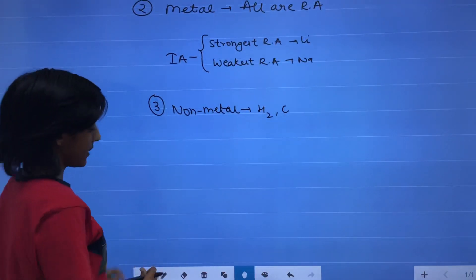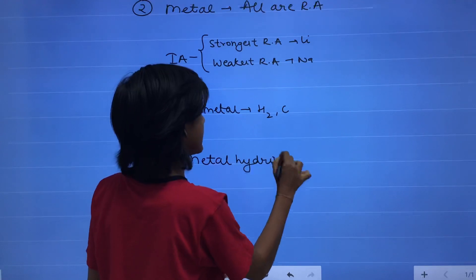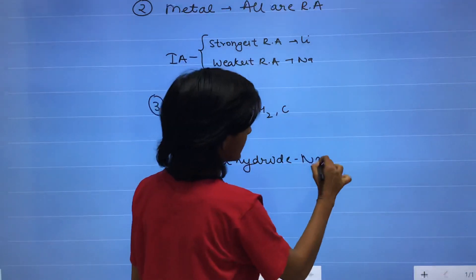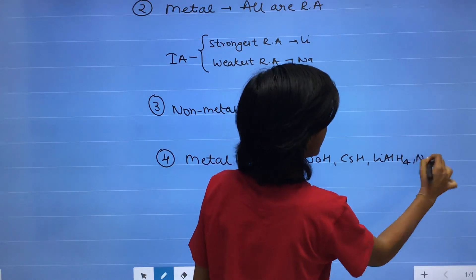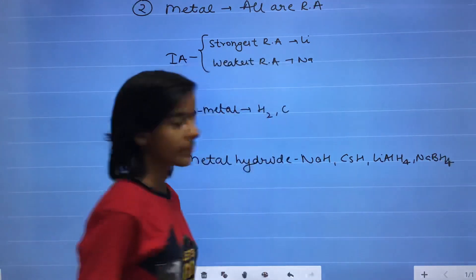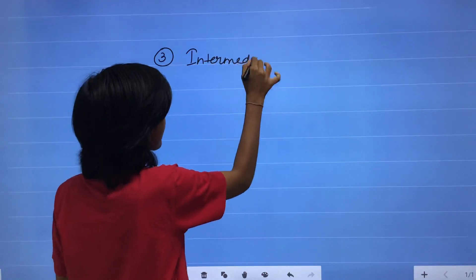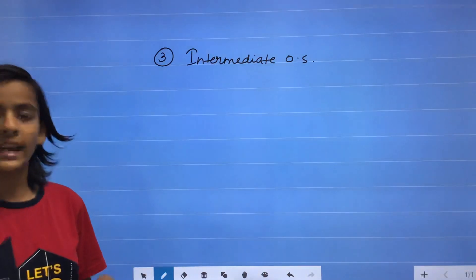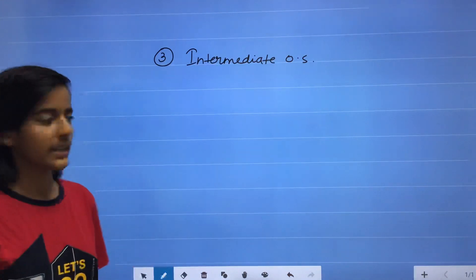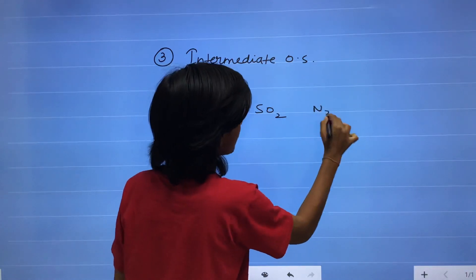In metal hydrides, examples include sodium hydride, cesium hydride, lithium aluminium hydride, and sodium borohydride. Third, at intermediate oxidation state, a compound can act as both a reducing agent and an oxidizing agent. Examples include H2O2, SO2, and N2O3.